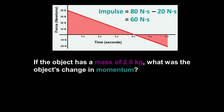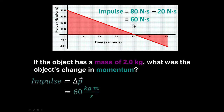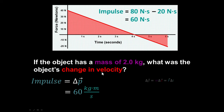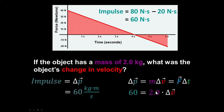If the object has a mass of 2 kilograms, what was its change in momentum? Impulse equals change in momentum, so 60 newton-seconds of impulse means a change in momentum of 60 kilogram meters per second. What about the change in velocity? Change in momentum equals mass times change in velocity: 60 equals 2 times Δv. Dividing both sides by 2, the velocity changed by 30 meters per second.